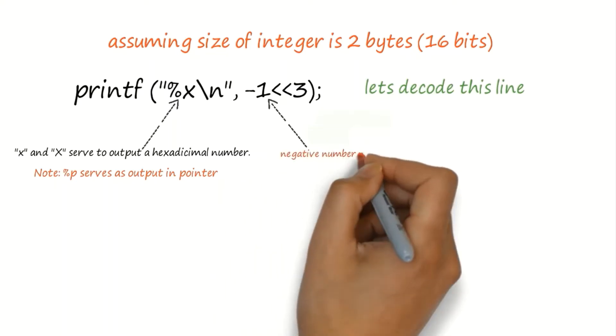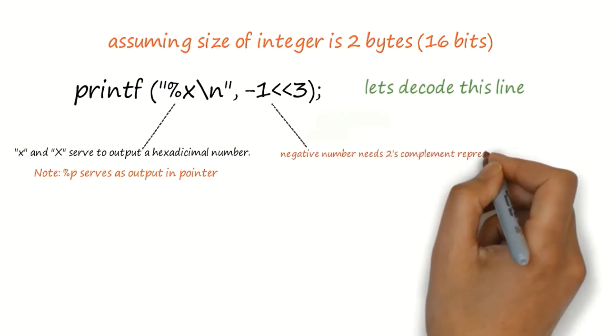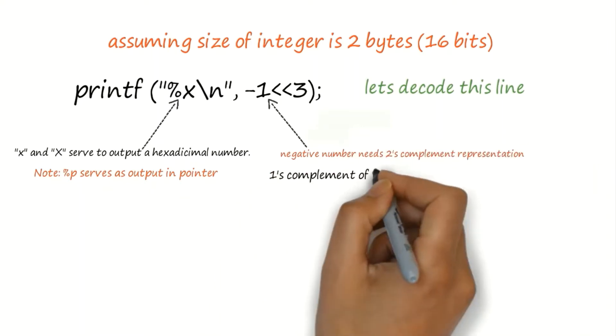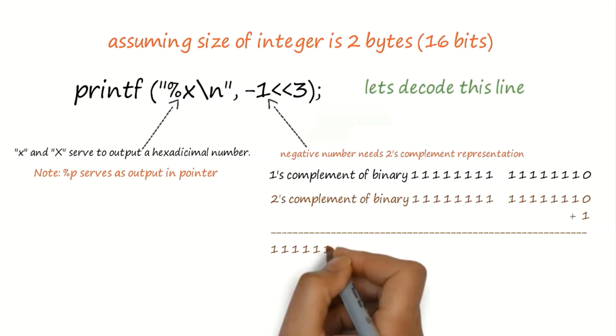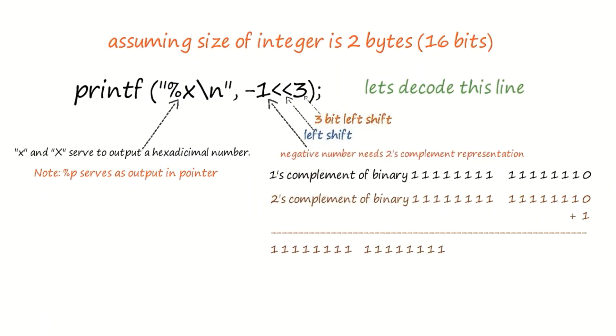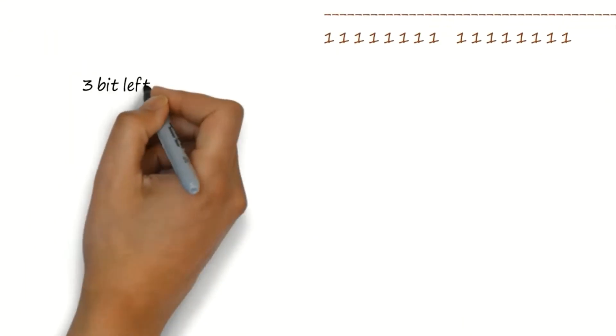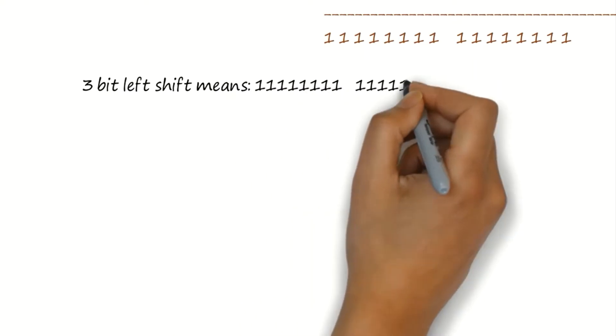Minus 1 needs 2's complement representation as negative numbers will always be represented by 2's complement. The << sign denotes left shift, and 3 indicates left shift by 3 bits. So 3 ones will be shifted left, while 3 zeros will be appended at right.